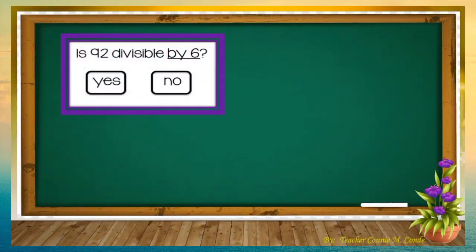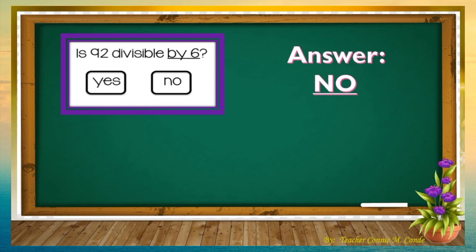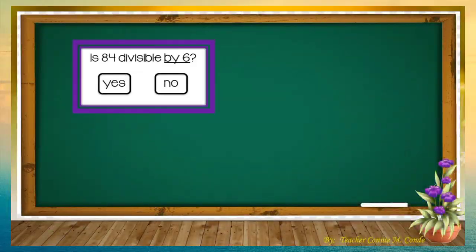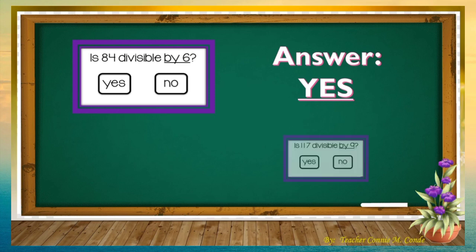Number 2: Is 92 divisible by 6? Yes or no? The answer is no. Number 3: Is 53 divisible by 3? Yes or no? The answer is no. Number 4: Is 84 divisible by 6? Yes or no? The answer is yes.